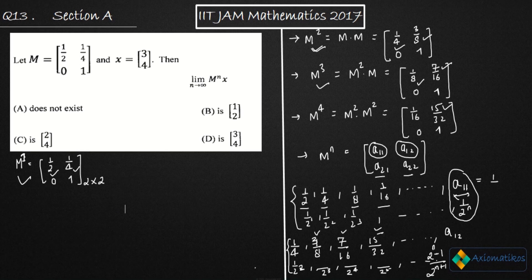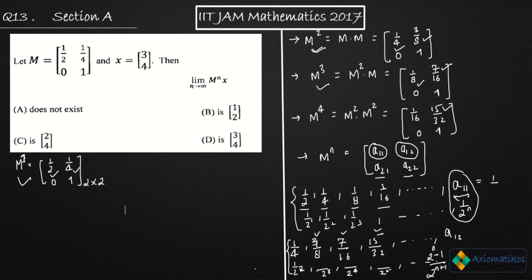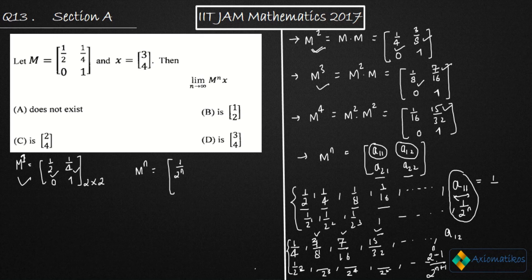I have now calculated everything. Mⁿ is: a₁₁ = 1/2ⁿ, a₁₂ = (2ⁿ−1)/2ⁿ⁺¹, a₂₁ = 0, a₂₂ = 1. This is our final general matrix Mⁿ.